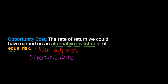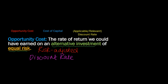Now, before I conclude this video, there is one important thing I want to emphasize. In my experience, students often get lost in jargon. They'll hear the term opportunity cost, or cost of capital, or applicable or relevant discount rate. Look, they all mean the same thing. We know that our opportunity cost is the rate of return we could have earned on an alternative investment of equal risk, and it is this opportunity cost that is always your discount rate. So we can call it our applicable discount rate, our risk-adjusted discount rate, or our relevant discount rate. Cost of capital means the same thing.